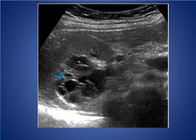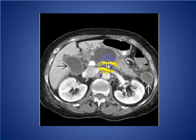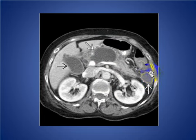Pancreatic pseudocyst: the most common pancreatic mass, especially in symptomatic patients with history of alcohol abuse or gallstones. Here we see a contrast axial CT scan with a pseudocyst in the neck and body of the pancreas, and another cyst in the left pararenal area with an enhancing wall, indicating infection. The gallbladder is also visible.